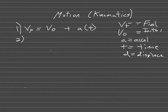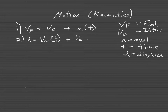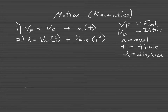The second equation is: displacement equals initial velocity times time plus one-half a times t squared. We can use this to solve for displacement if given initial velocity, time, and acceleration. But we can't use it to solve for final velocity, because final velocity is not part of this second equation.